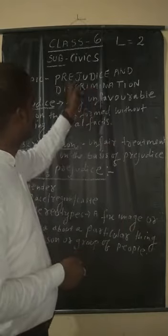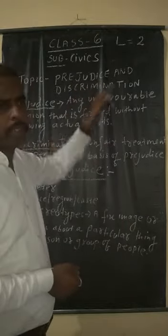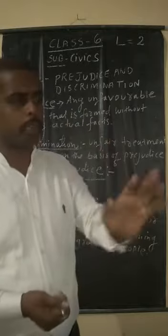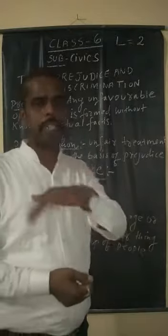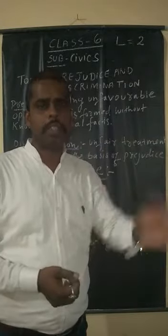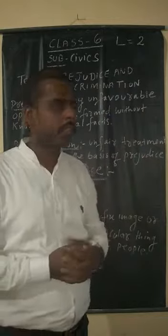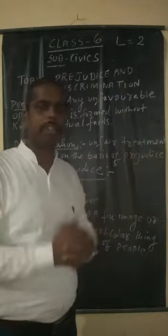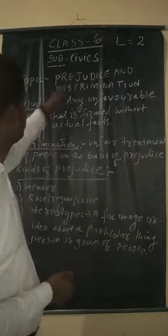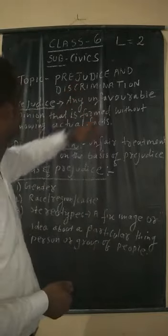This process is known as prejudice. Discrimination means unfair treatment of people — for example, higher class people treating lower class people unequally. That was in the past, but today we all are equals. So I will clarify the definitions of these two points: prejudice and discrimination.